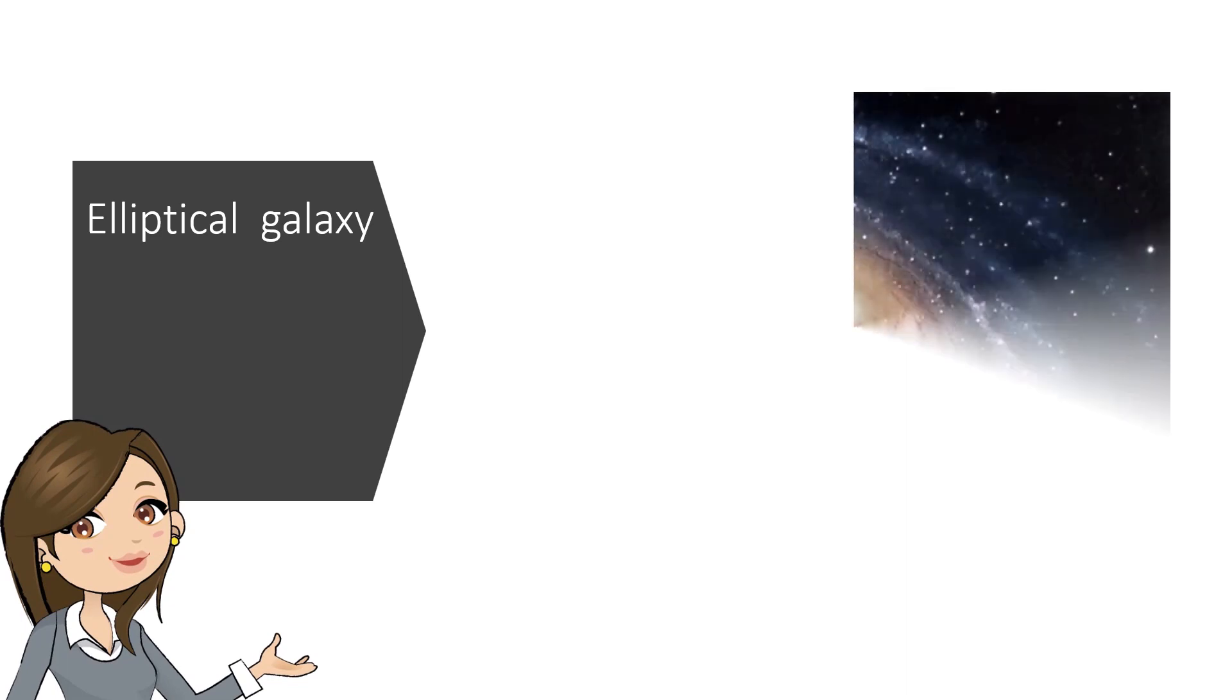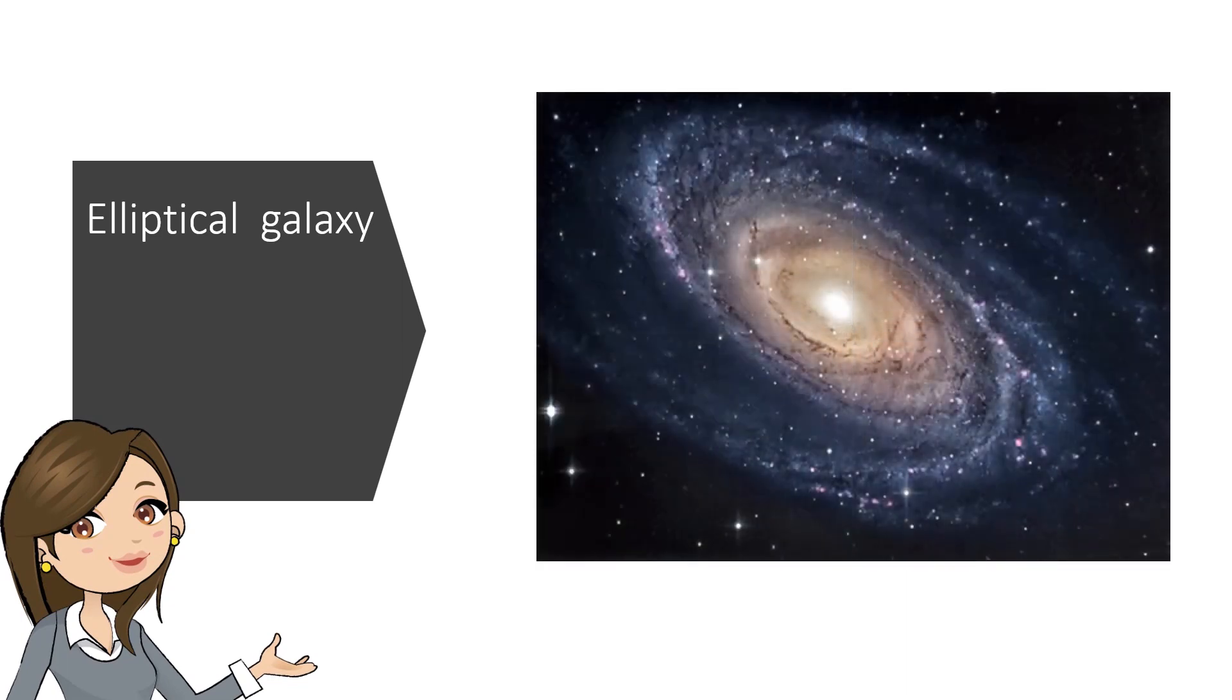Next is Elliptical Galaxy. Elliptical Galaxy includes Ursa Major and Messier 87. Both look elliptical.